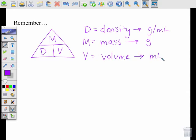The way you use this triangle is you cover up the letter that you are looking for. So let's say I'm trying to solve for density. I would cover up density, and the two letters left are M over V. So density equals mass over volume. There's your formula.